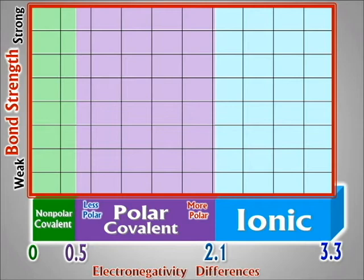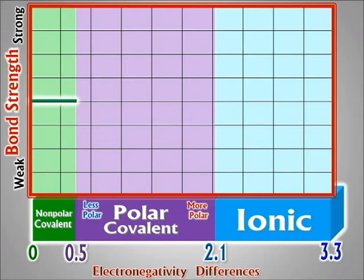Covalent bonds are actually pretty strong. Nonpolar covalent bonds are moderately strong. I'm deliberately leaving numbers off my y-axis because it depends on many other factors. But as a rule of thumb: from 0 to just below 0.5 electronegativity difference, bond strength is essentially a flat line. All those nonpolar covalent bonds — 0.1, 0.2, 0.3, 0.4 — they're all the same strength.